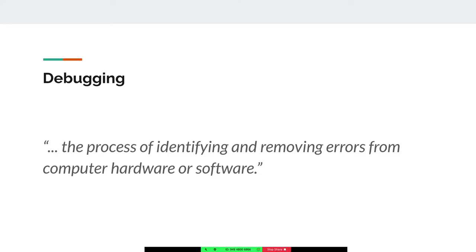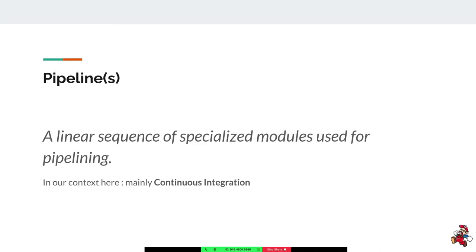So first, debug what? Debugging is the process of identifying and removing errors from computer hardware and software. In this case, we'll be talking about debugging in terms of pipelines and debugging pipelines themselves. Pipelines usually are a linear sequence of specialized models used for pipelining — basically you do a task or an action, then an action, then an action, and some can be in sequence, some can be in parallel.